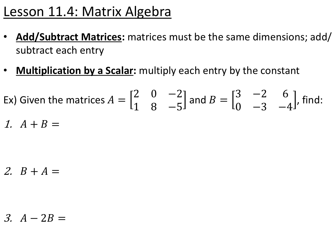Section 11.4 is matrix algebra. We can add and subtract matrices, but they must be the same dimension — the same rows by columns — then you just add or subtract each corresponding entry. We can also multiply by a scalar, which is just a regular number. If multiplying by a scalar, you multiply every single entry by that scalar value. For matrices A and B, to find A plus B we add each corresponding entry: 2 plus 3 is 5, 0 plus negative 2 is negative 2, negative 2 plus 6 is 4, 1 plus 0 is 1, 8 plus negative 3 is 5, and negative 5 plus negative 4 is negative 9.